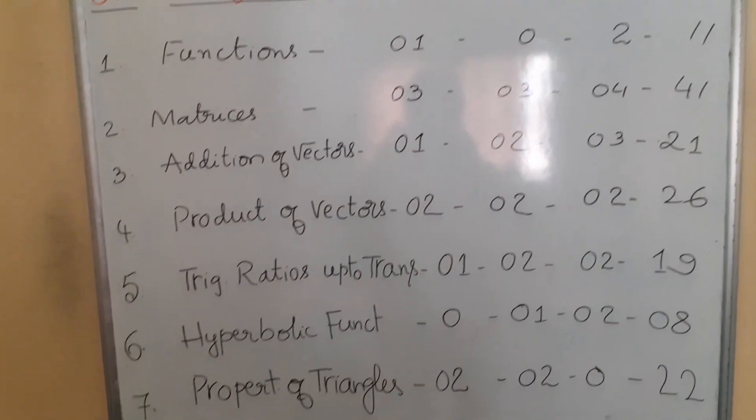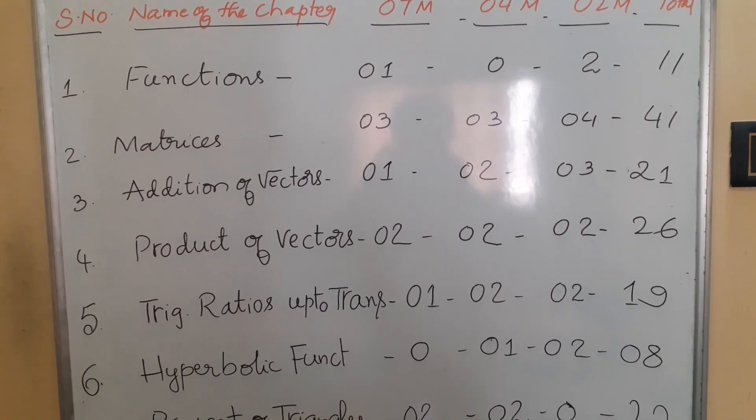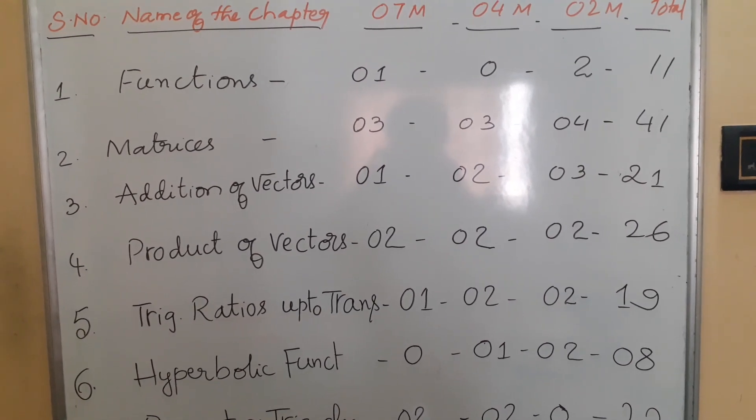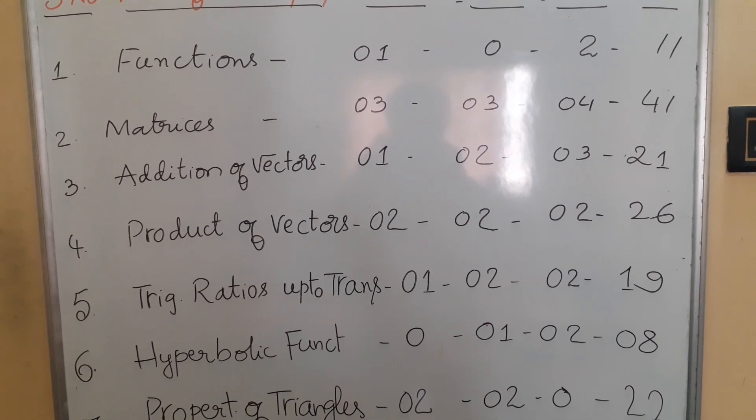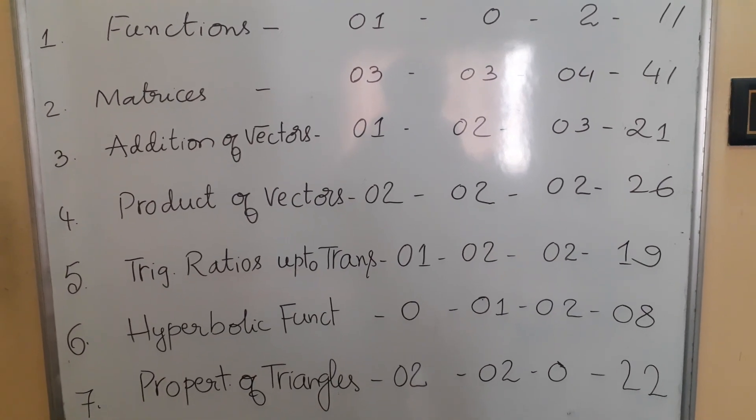The seventh and last one is Properties of Triangles. From this chapter, two 7-mark questions, two 4-mark questions, zero 2-mark questions. So 22 marks weightage is given to Properties of Triangles.